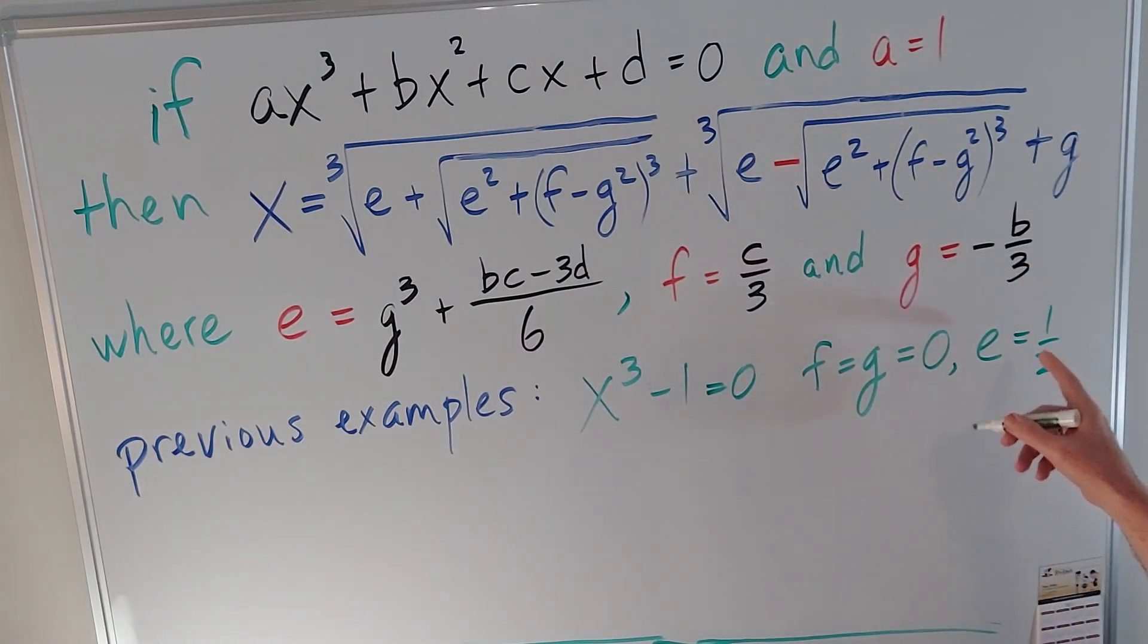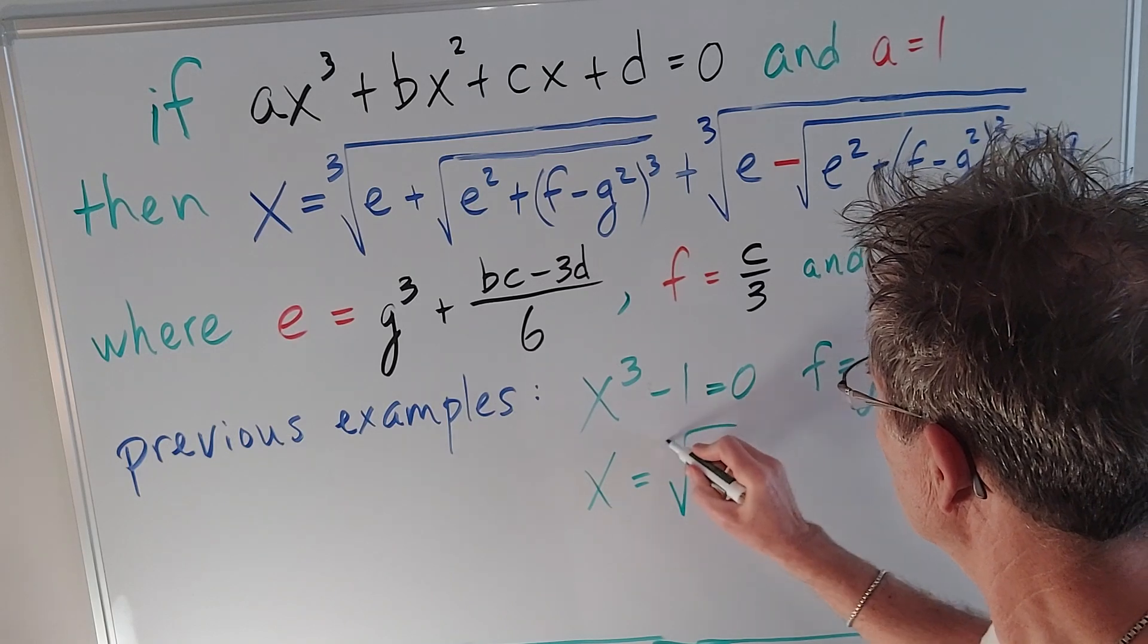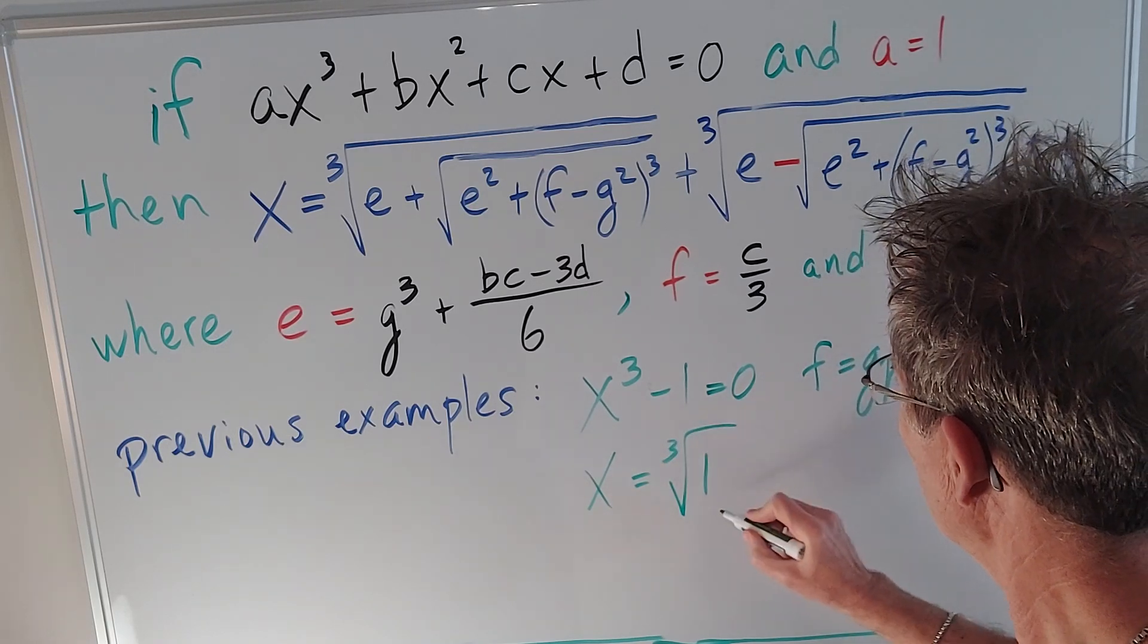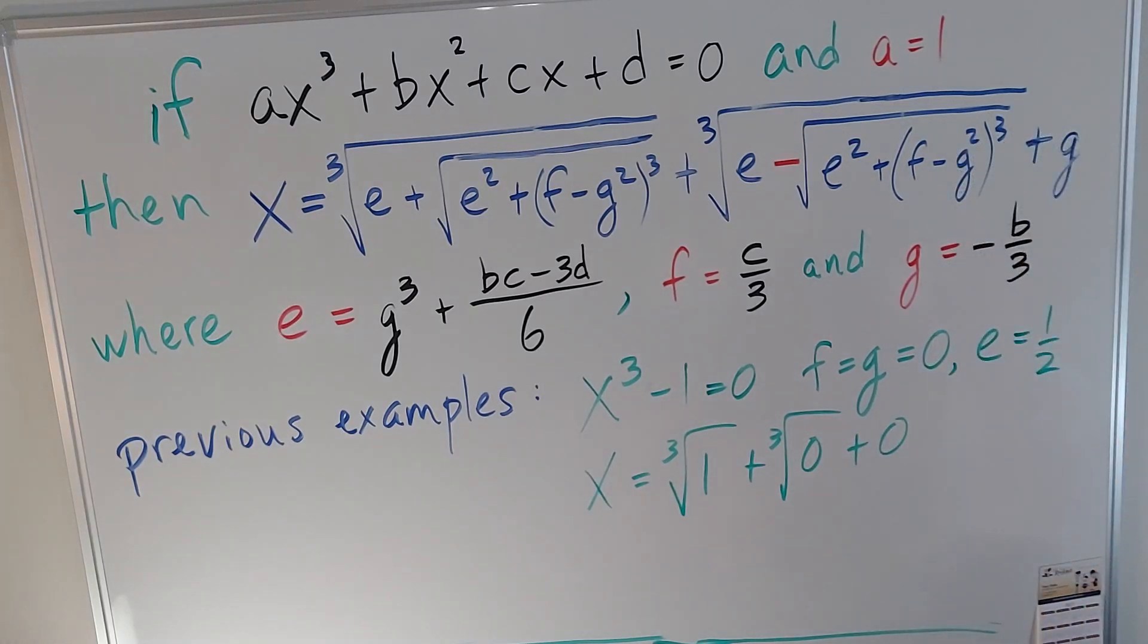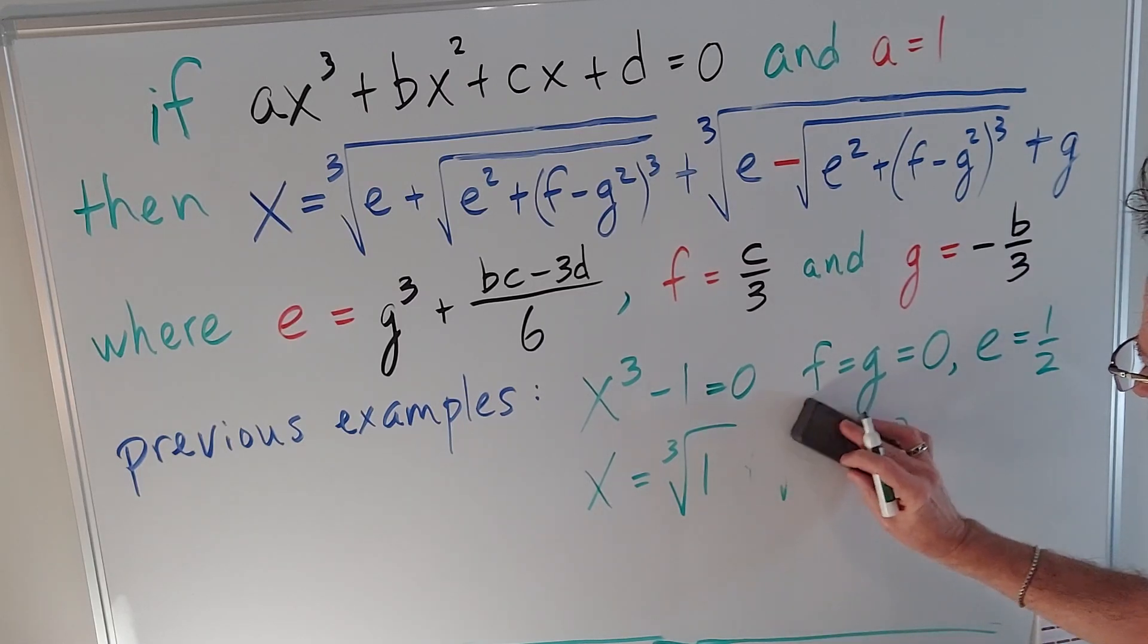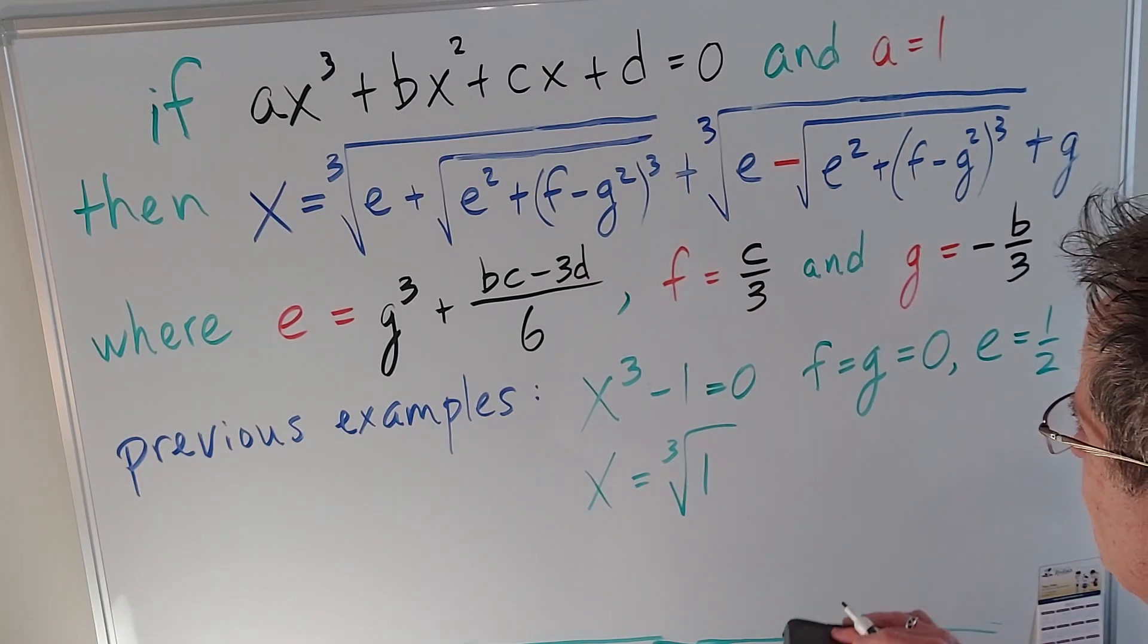And if I plug those values into this formula I get x equals the cubed root of one plus the cubed root of zero plus zero. So again it doesn't tell me a whole lot. It just tells me that x is the cubed root of one. So we have to analyze it in a different way.